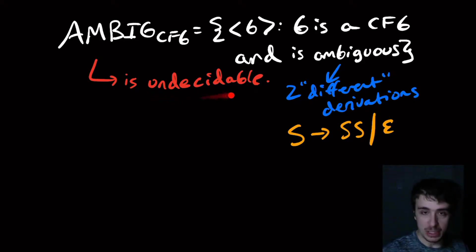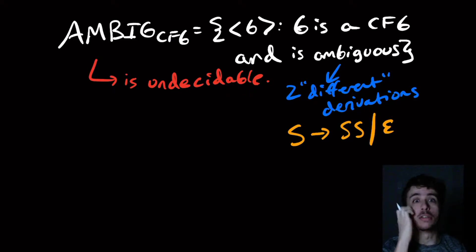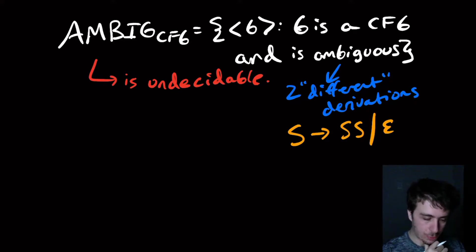It turns out that this problem is undecidable. We can't actually figure out whether an arbitrary CFG is ambiguous or not, sadly. So how does this proof go?